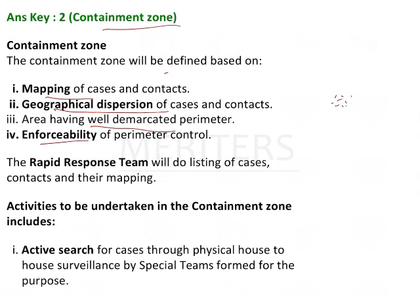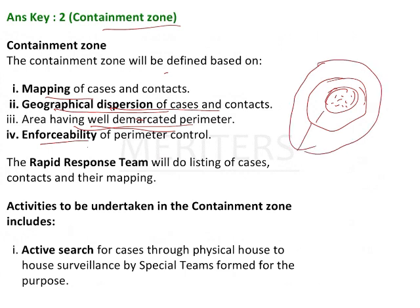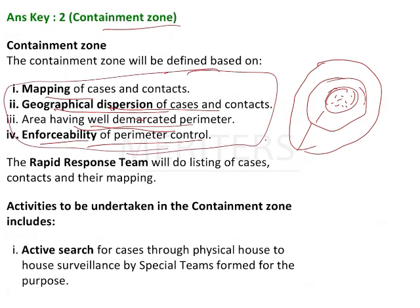They perform mapping of the cluster of cases and assess how far it has spread — whether within a 1 km span or 5 km span. Another key factor is well-demarcated perimeters, identifying the buffer zone and the contaminated zone, along with enforceability — enforcing the law and local restrictions. After that, the rapid response team, including medical personnel, will reach the area.